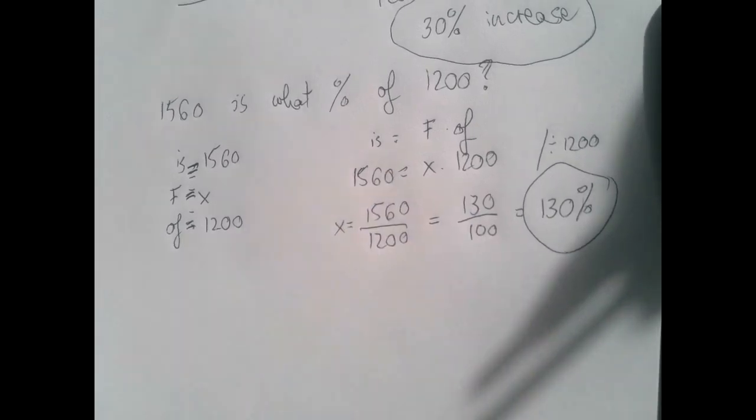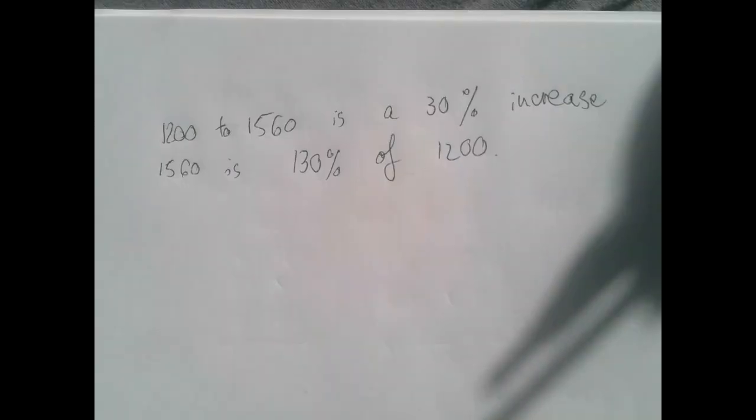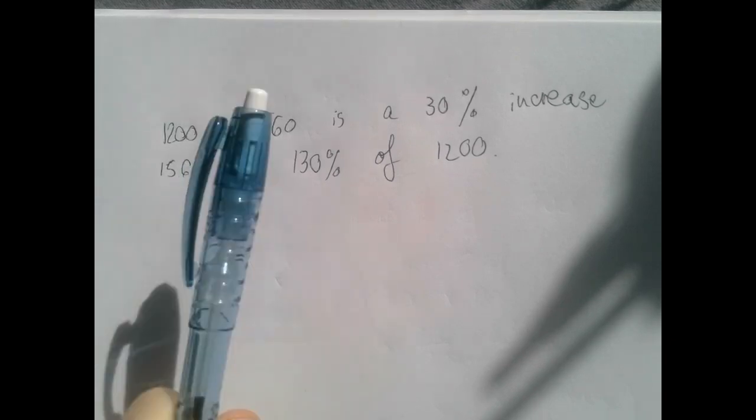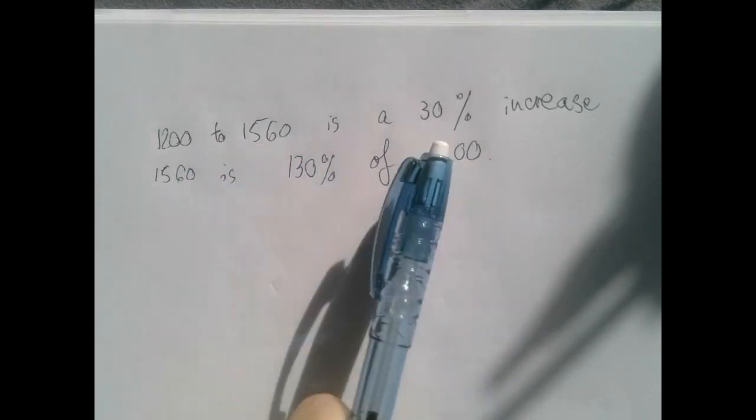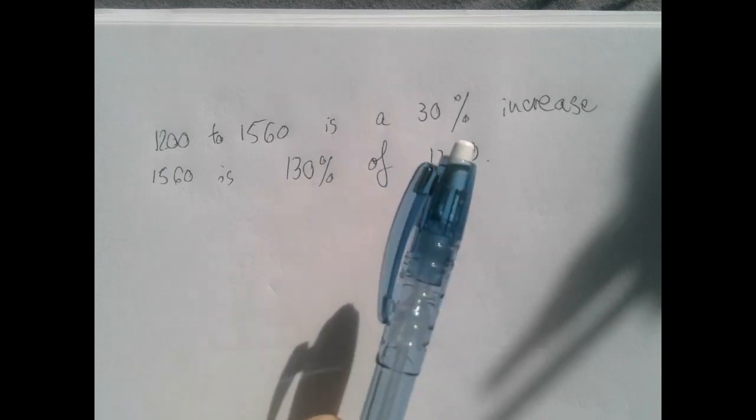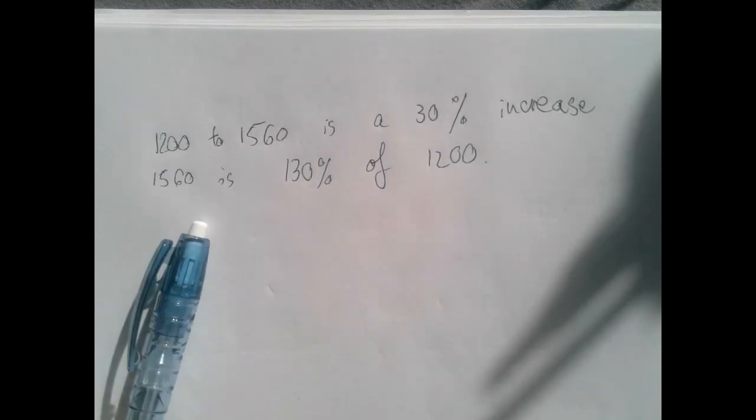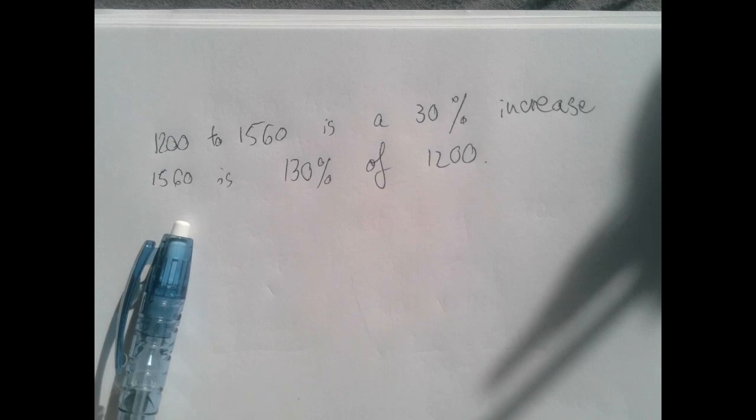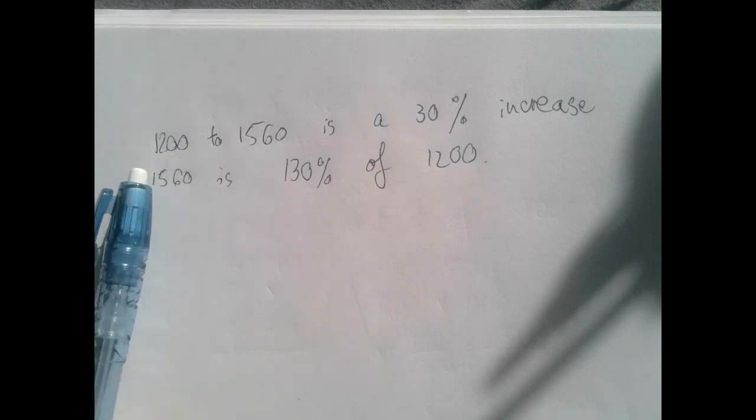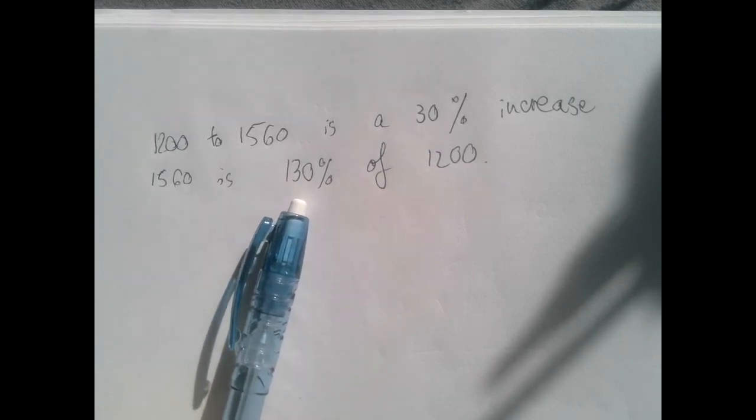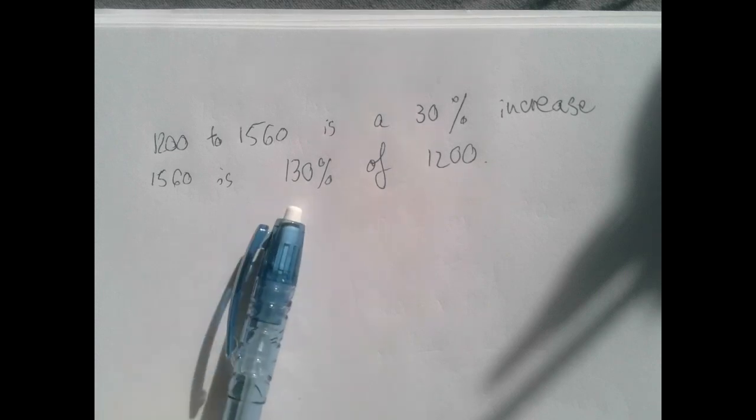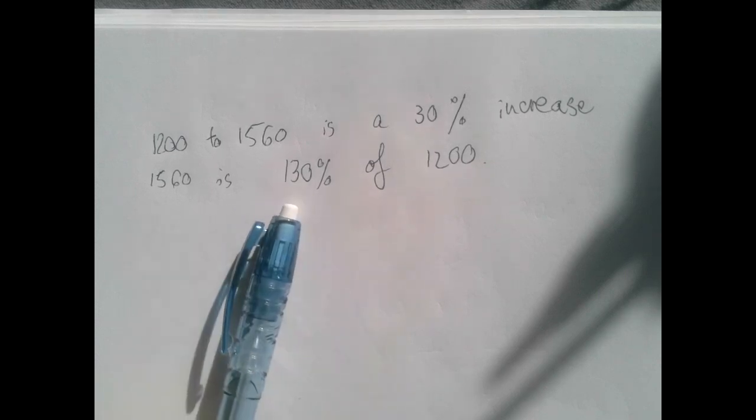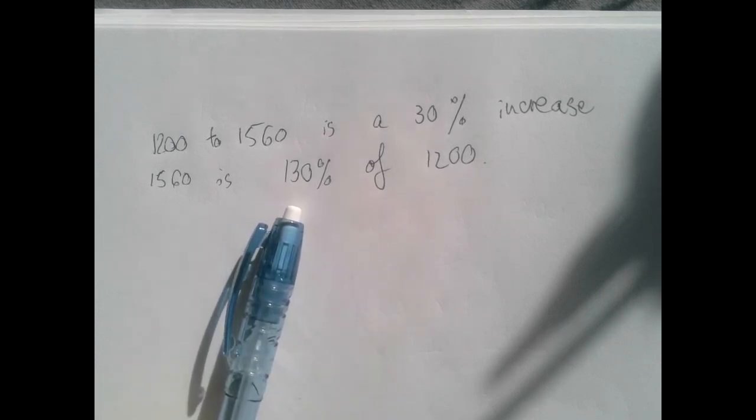Basically, we solved the same question twice. So in the first one, we subtracted, we got the change, and we compared it to 1200, and we found that it's 30 percent. In the second method, we just said the resulting quantity is what percent of 1200, and we found that it's 130 percent. And now comes the subtraction. 130 percent minus 100 percent, the change is 30 percent.